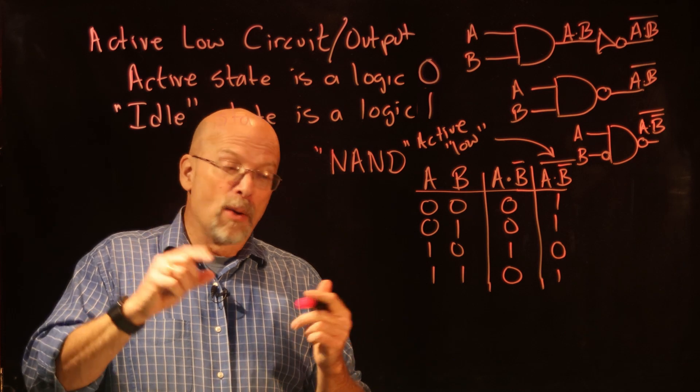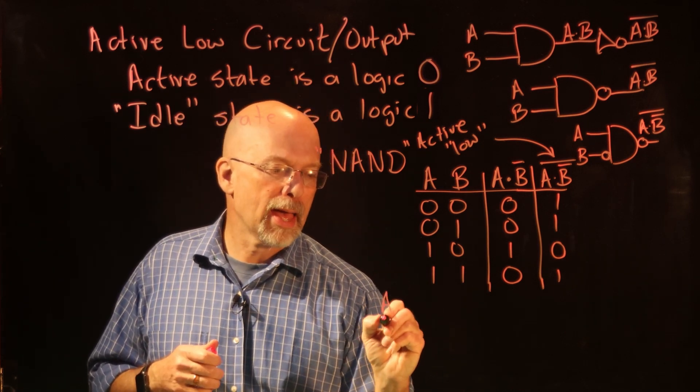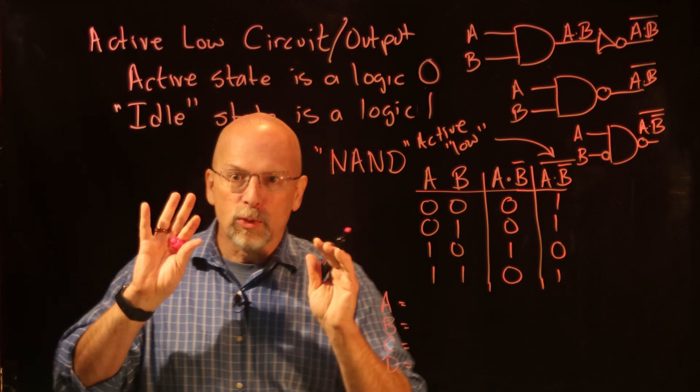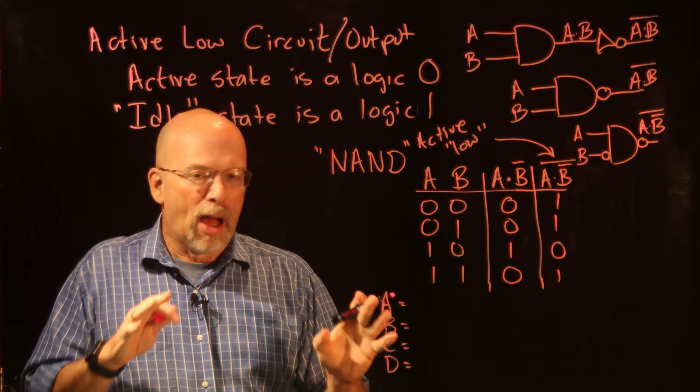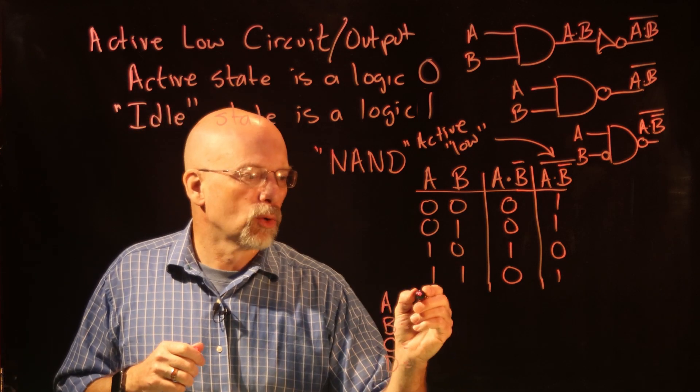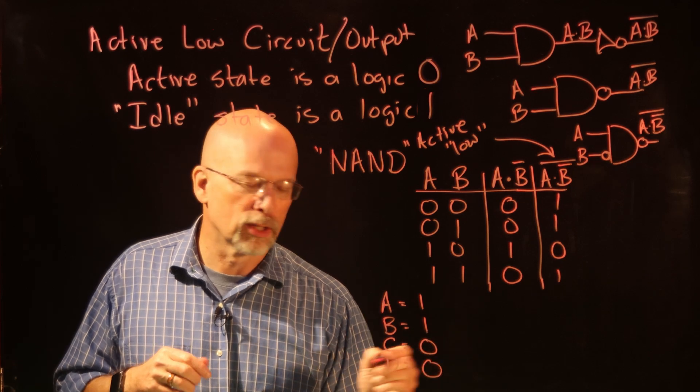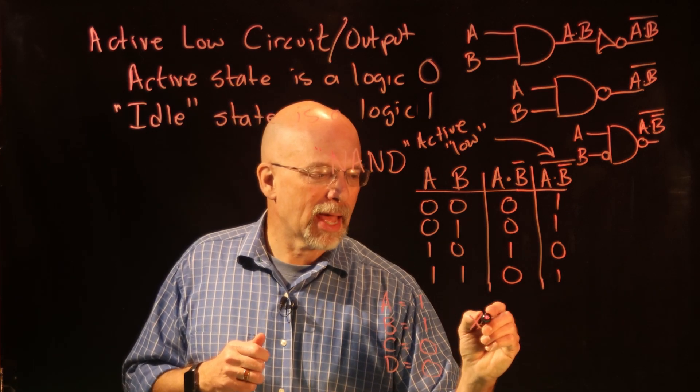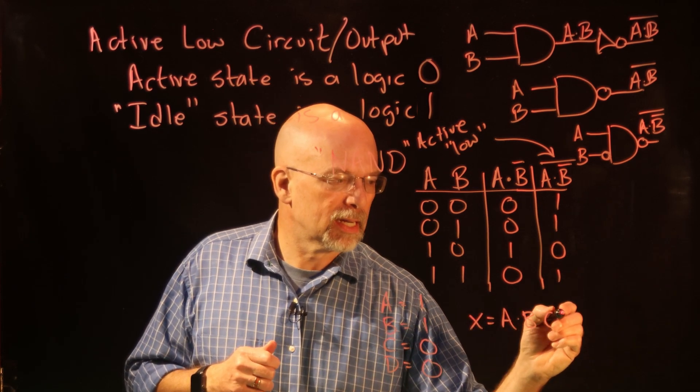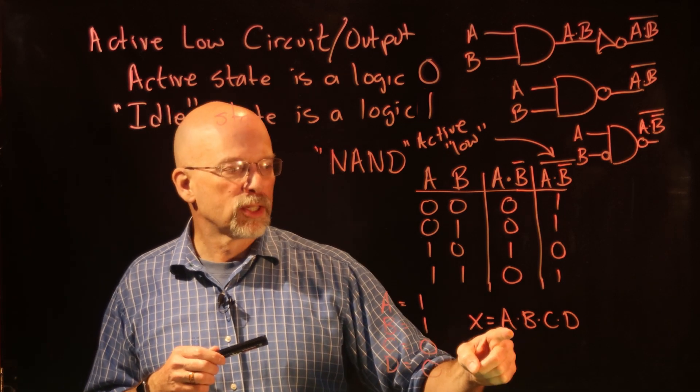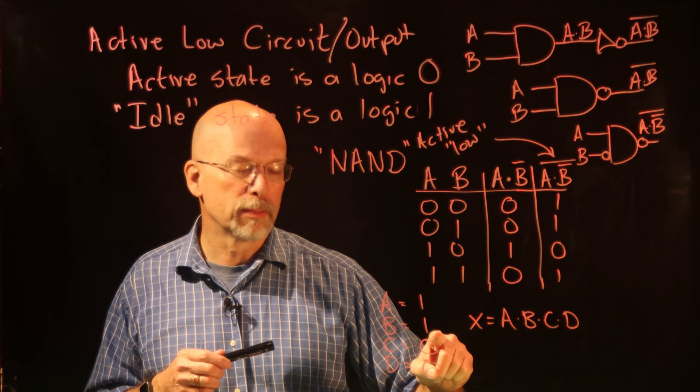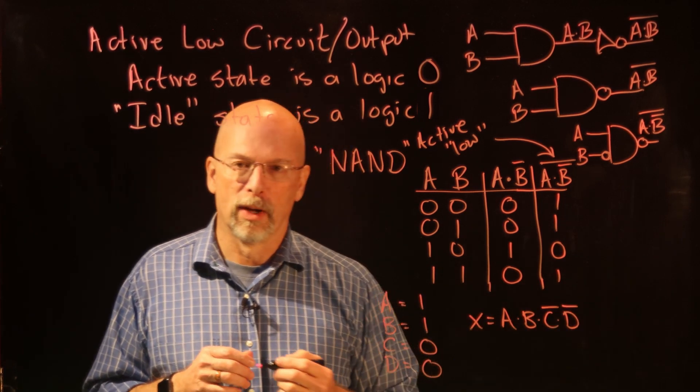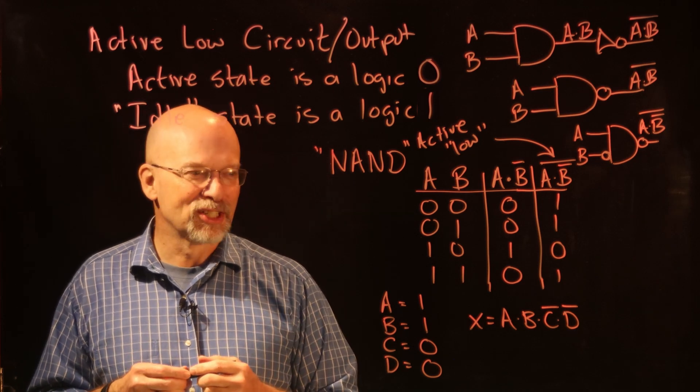So maybe we want to figure out whether we have, you know, maybe four inputs. And I want to figure out the condition. Maybe my four inputs are A, B, C, and D. And I want to figure out the unique condition. And this, by the way, is referred to as a decoder. I want to decode the unique condition when A is a 1, B is a 1, C is a 0, and D is a 0, all right? What does it look like? Turns out that the circuit is quite simple. So X equals—first of all, we're looking for a condition that involves all four of those variables. What does A need to be? A needs to be a 1. What does B need to be? B needs to be a 1. What does C need to be? C needs to not be a 1. What does D need to be? D needs to not be a 1. Wow, that was a real quick way to create a logic expression, wasn't it?